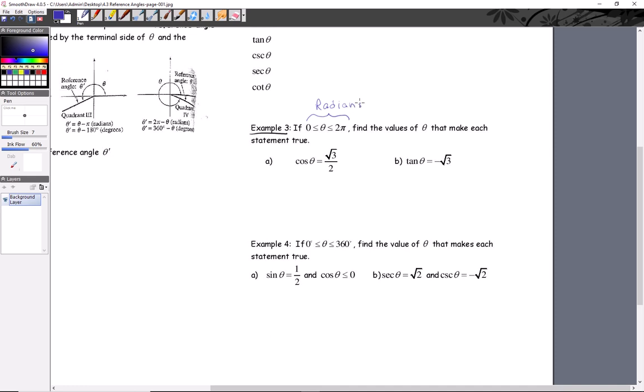So they want you to find the value of the angle theta that makes each statement true. All right, so cosine theta is radical 3 over 2. Of course you have to kind of know your unit circle, but at least you can note that cosine is an x-coordinate.